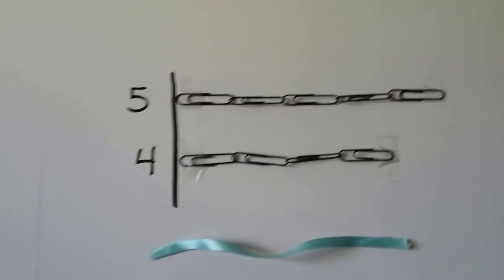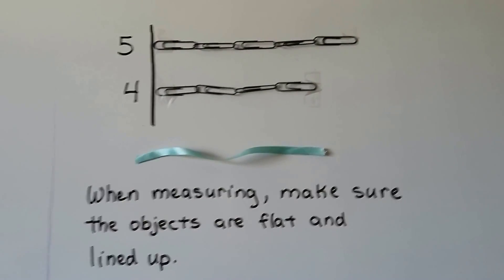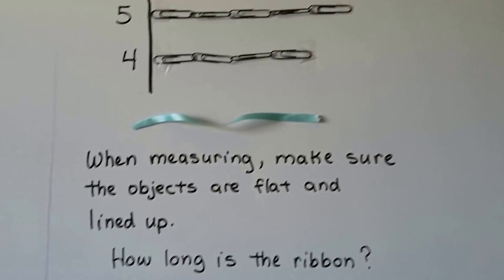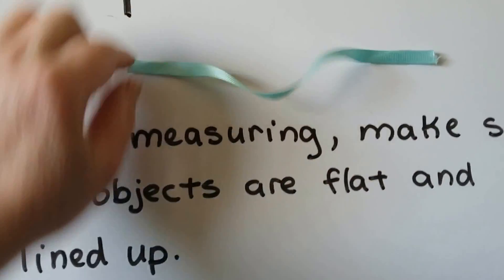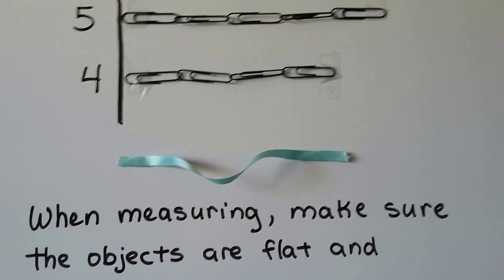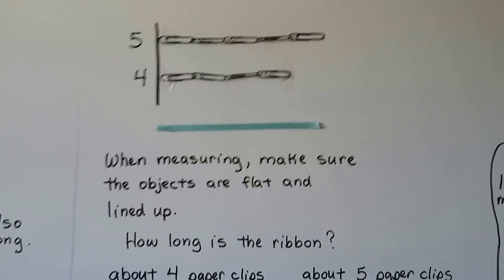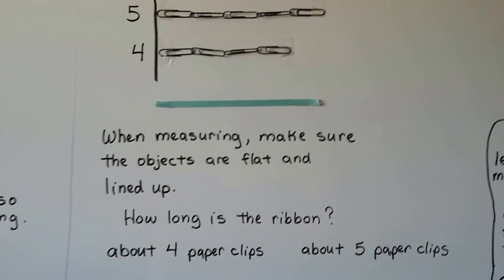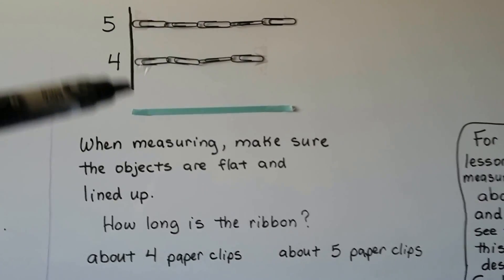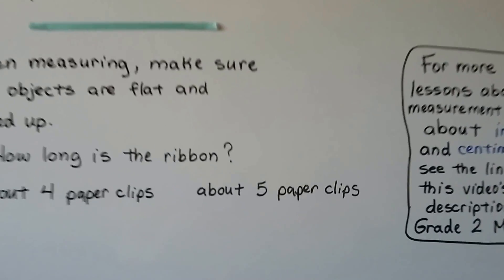Here we have 5 paperclips and 4 paperclips. When measuring, make sure the objects are flat and lined up. We want to measure this ribbon. The first problem is that it's not lined up with the paperclips — we need to move it so the end is lined up and they start at the same place. It's also not flat; we need to stretch it out, flatten it, and make it straight so we can measure it. We can see that it's lined up and it's about 5 paperclips long.